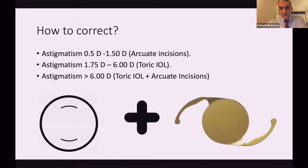The decision on how to correct astigmatism depends on the value of corneal astigmatism before surgery. If astigmatism is of low value up to 1.5 diopters, arcuate incision may be enough. If the value is up to six diopters, TORIC IOL is definitely superior. And sometimes we find a patient with a value higher than six diopters and we have to go for both TORIC IOL and arcuate incision at the same time.